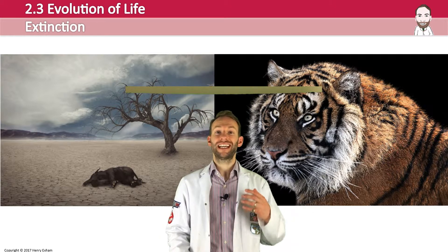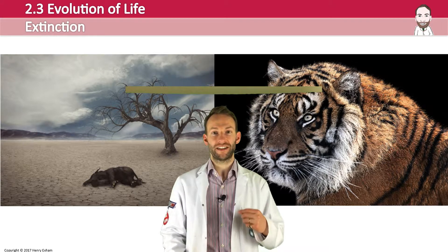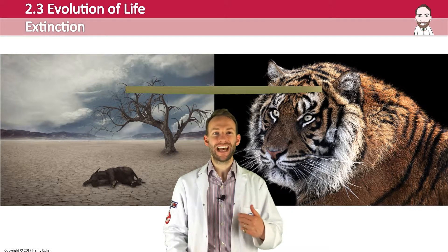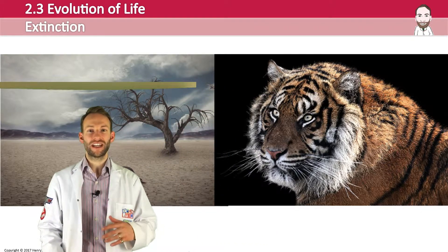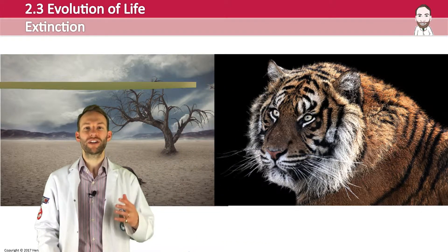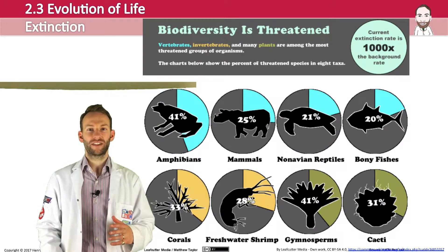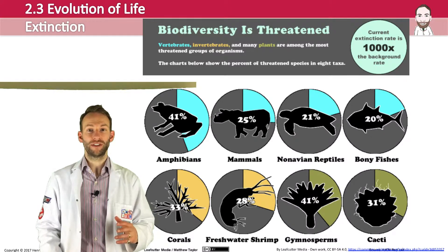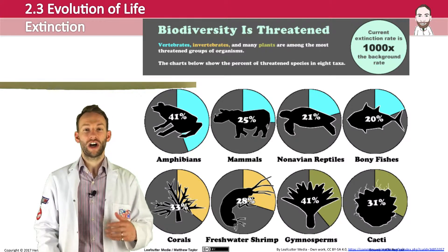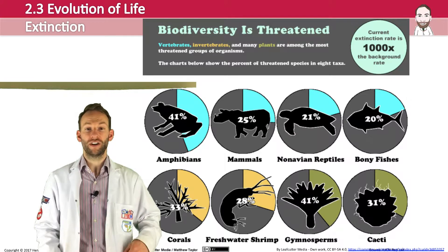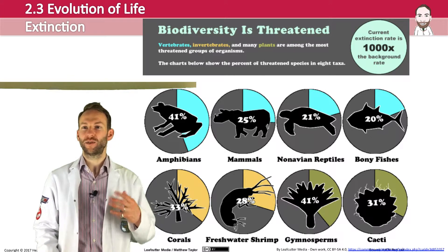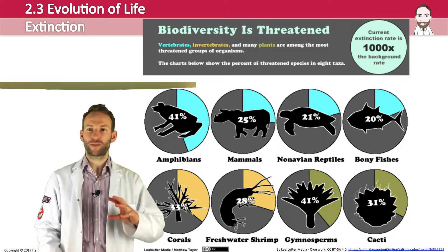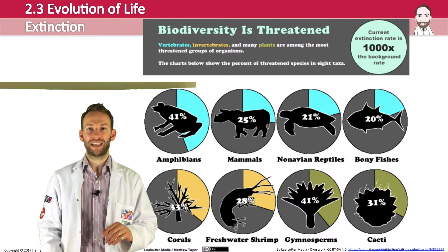However, extinction is happening at a much faster rate than that. In fact it's currently at its highest rate ever. In tropical areas, the current rate of extinction is between 1,000 and 10,000 times higher than the background extinction rate. For example, a third of all marine fish rely on coral reefs, and at the current rate of destruction half of the world's reefs could be lost within the next 20 years. This graphic displays just how biodiversity is being threatened.